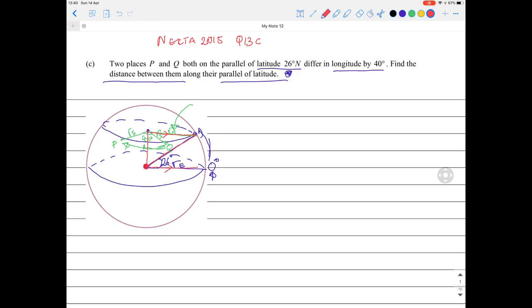This is your transversal line. Remember angles on a parallel line - we have this angle here is going to be equal to this angle here because alternate angles are equal. So this angle here is 26 degrees. This line is also radius of the earth.